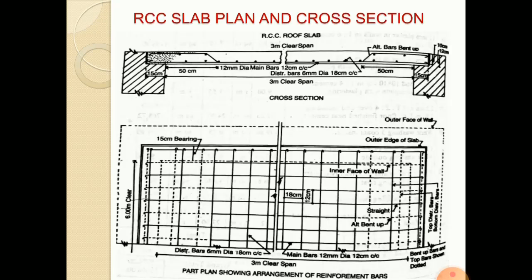They have prepared a detailed estimate of an RCC roof slab of 3 meter span from the given drawing. RCC work including centering and shuttering, steel reinforcement may be taken separately. This is the drawing of the roof slab. The top figure is showing the cross section and bottom figure is showing part plan, showing the arrangement of reinforcement of bars.